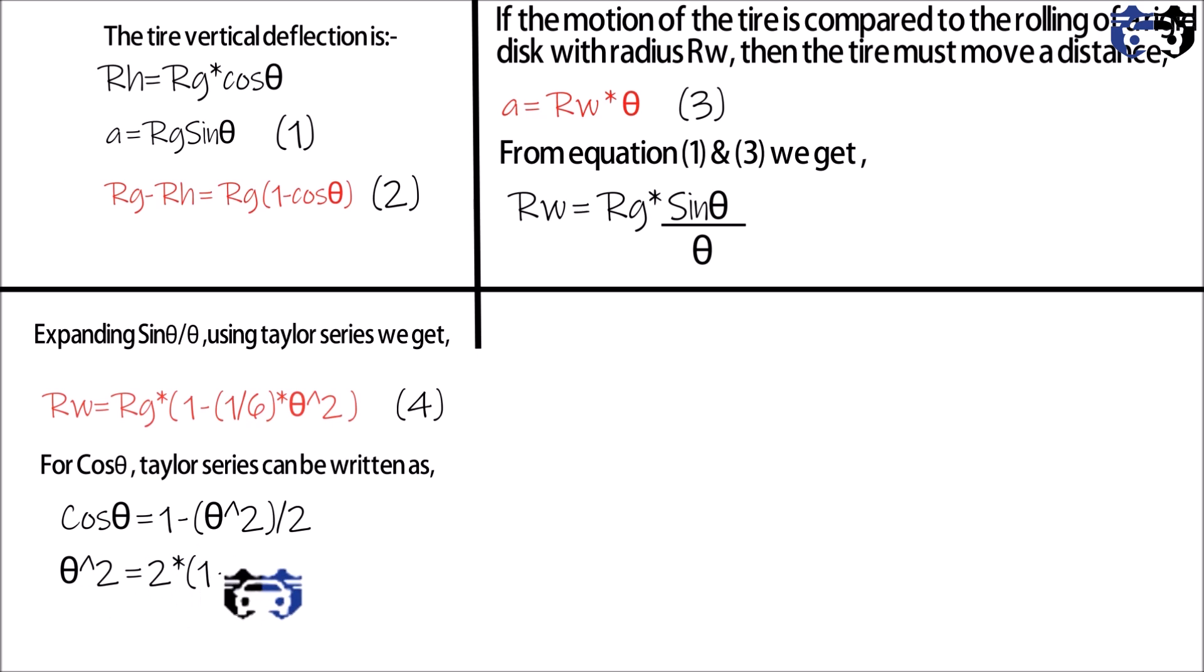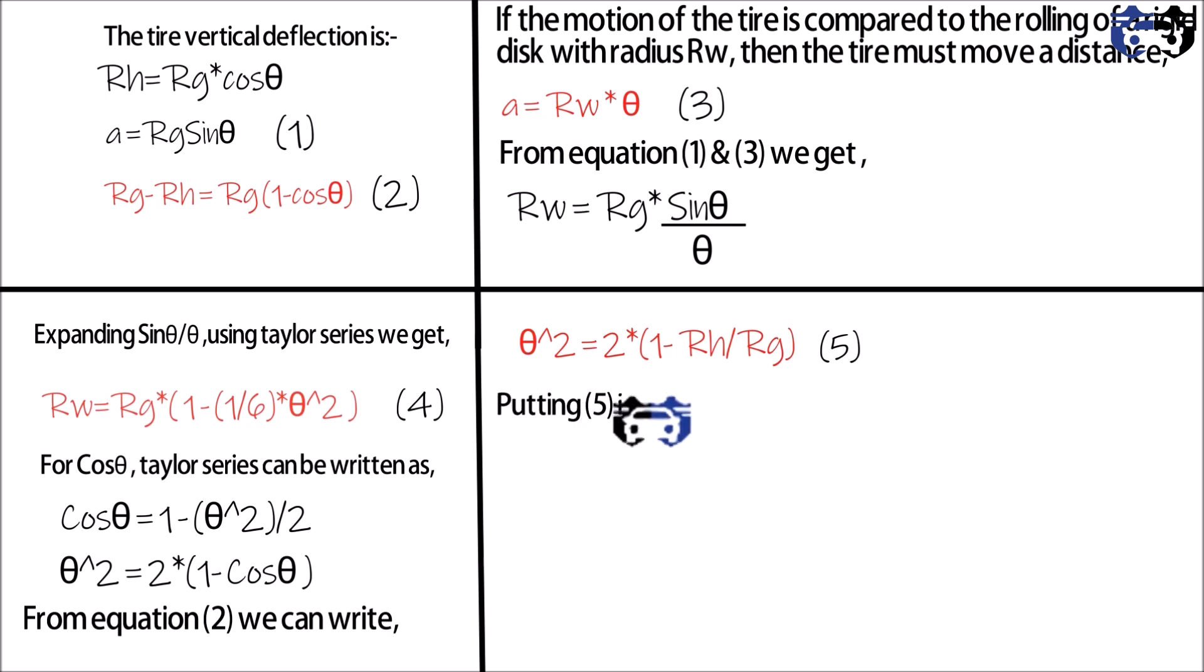Again, I'm taking only two terms. Now from here you can write theta square equals to two into one minus cos theta. So from equation two we can write theta square equals to two multiply by one minus Rh by Rg. So this is our equation five. Now I'm going to put equation number five into equation number four.